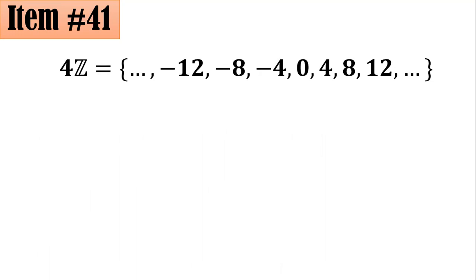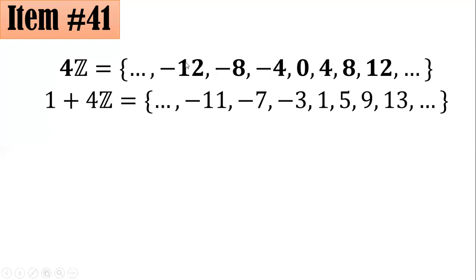So integer multiples of 4, either positive or negative. Note that 0 is also an integer multiple of 4 because 4 times 0 is 0. If I have 1 plus 4Z, I will add each term by 1. 1 plus negative 12 will be negative 11. 1 plus negative 8 is negative 7. 1 plus negative 4 is negative 3, and so on. That's why you have here the set 1 plus 4Z.